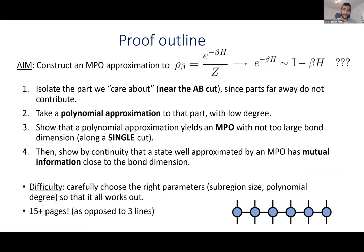Now I want to talk about the proof. The aim is to construct an MPO approximation — a tensor network approximation — to the thermal state. A very naive way to do this is to approximate the thermal state with the first-order Taylor expansion: identity minus βH. Of course this operator is very simple and can be represented well by an MPO, and it would have very small mutual information. But this approximation is completely silly because it only holds for an incredibly large temperature — one that actually scales with system size.